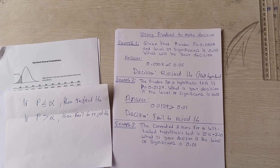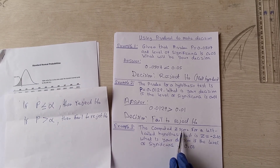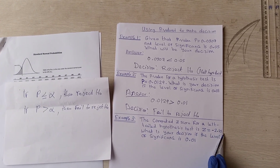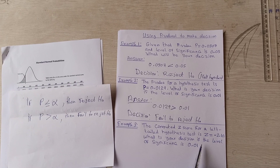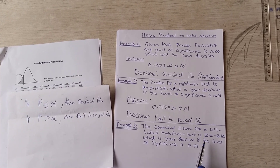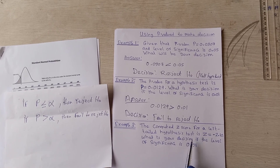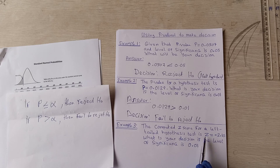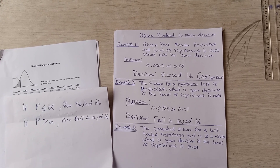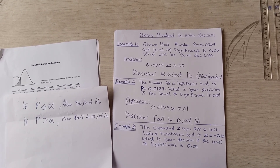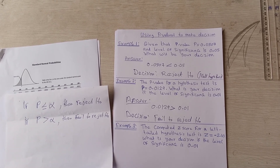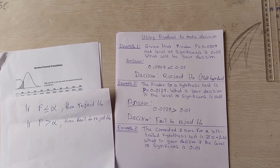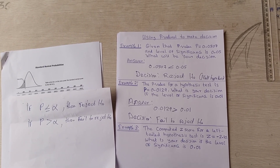Now Example 3: the computed z-score for a left-tailed hypothesis test is z = −2.10. What is your decision if the level of significance is 0.01? Here, we were not given a p-value — only the significance. Since we don't have the p-value, we need to find it using the z-score before we can make a decision. First, let us find the p-value, then compare it to the significance.